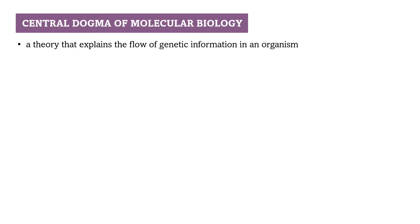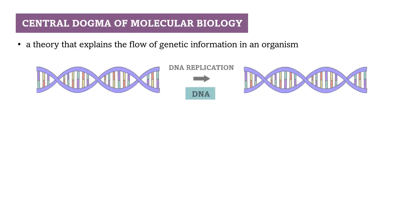In DNA replication, the DNA molecule duplicates, producing two molecules of DNA from the original one DNA molecule. The genetic information therefore passes from one DNA molecule to another.